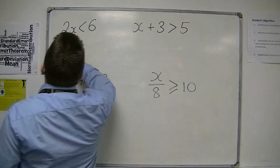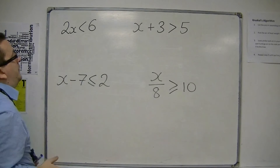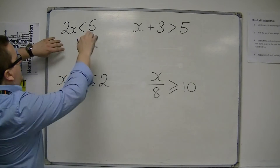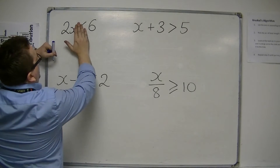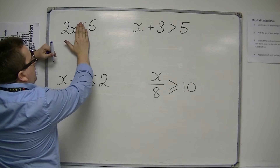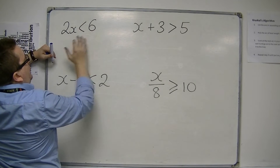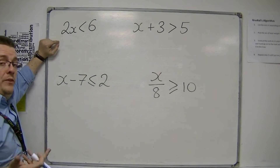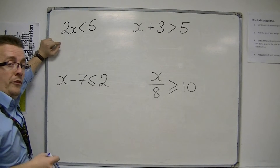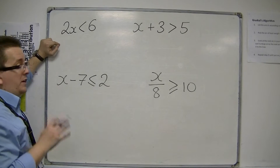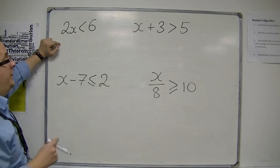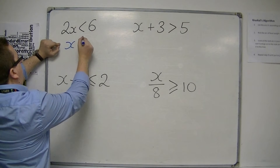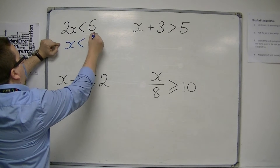So if 2x is less than 6, if I treat the inequality like an equal sign and think of 2x equals 6, what I would do is divide both sides by 2. And I can do exactly the same thing here. So x is less than 3.